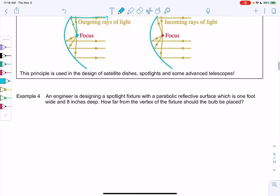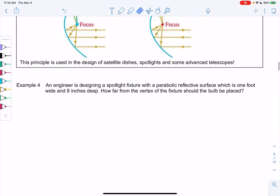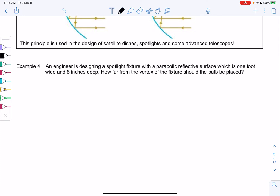So we have an engineer is designing a spotlight with a parabolic reflective surface. So it makes a parabola shape and it's one foot wide and eight inches deep. So let's draw it as if it's on a graph. Let's make the vertex (0, 0).